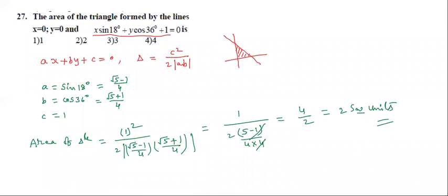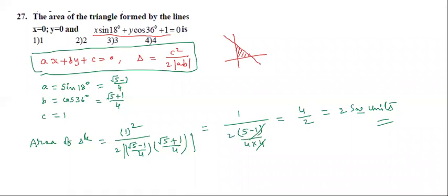All of you understood. If the line ax + by + c = 0 intersects the coordinate axis, the shortcut formula is Δ = c²/(2·|ab|). Finally we got the answer: 2 square units. Second option correct.